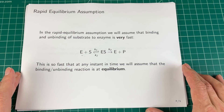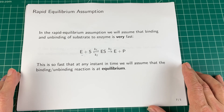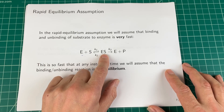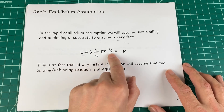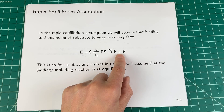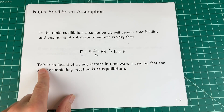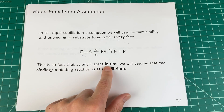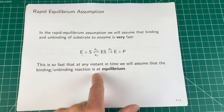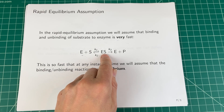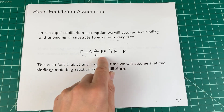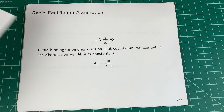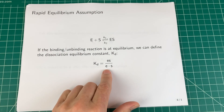Let's start with the rapid equilibrium assumption. Here we assume that the binding of E and S to form the enzyme-substrate complex, and its breakdown, is very fast — much faster than, for example, the breakdown of the enzyme-substrate complex into product. We assume that the equilibration between free enzyme and the complex is so fast that at any instant in time this binding-unbinding reaction is at equilibrium. If some ES disappears by breaking down to form product, it'll be immediately replaced.